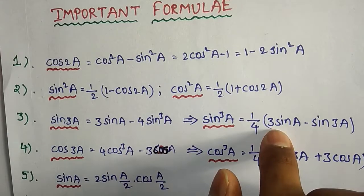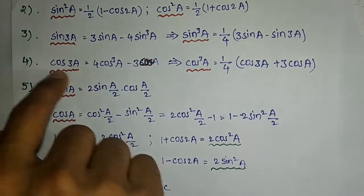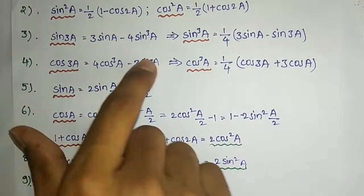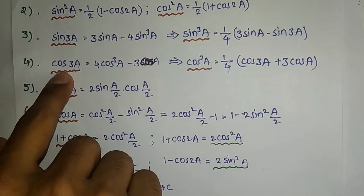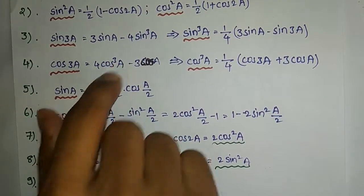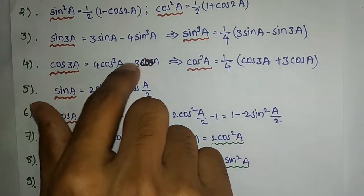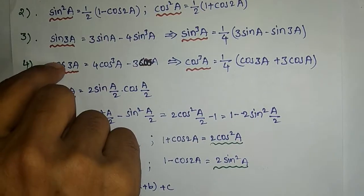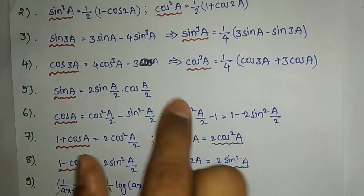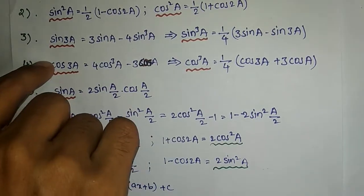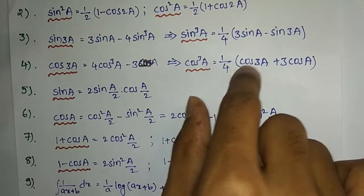cos3a equals 4cos³a minus 3cosa. This is the main formula. We are going to get the cos³a formula by rearranging: cos³a equals 1/4 into (cos3a plus 3cosa).